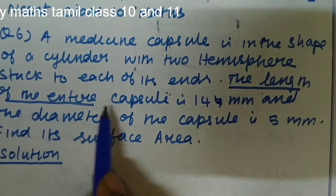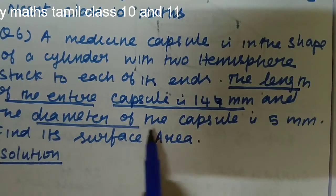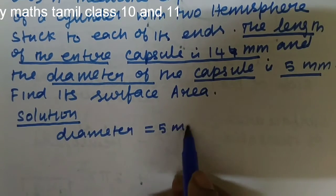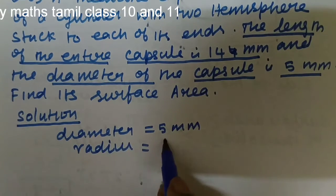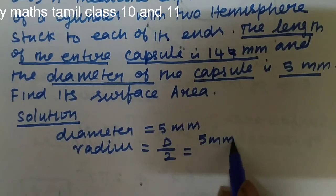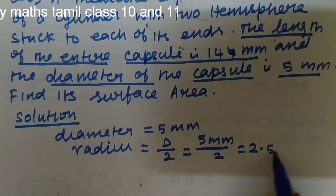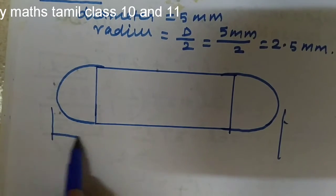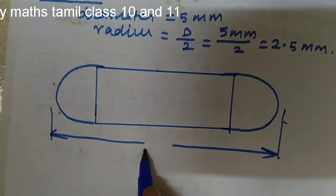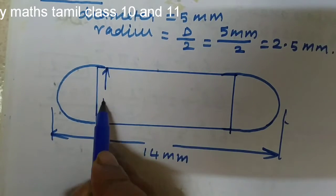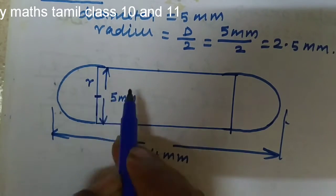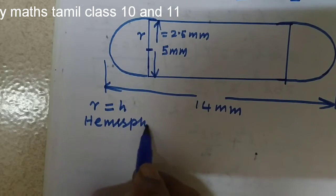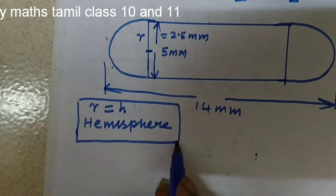The length of the entire capsule is 14 mm, meaning the total height of the solid is 14 mm. The diameter of the capsule is 5 mm, so we can calculate the radius as diameter divided by 2: 5 by 2 is 2.5 mm. The height of the hemisphere is equal to the radius of the hemisphere, so height is also equal to 2.5 mm.